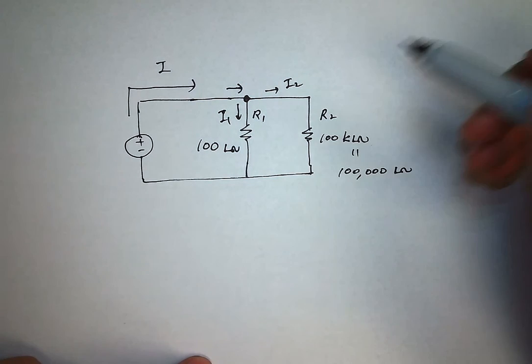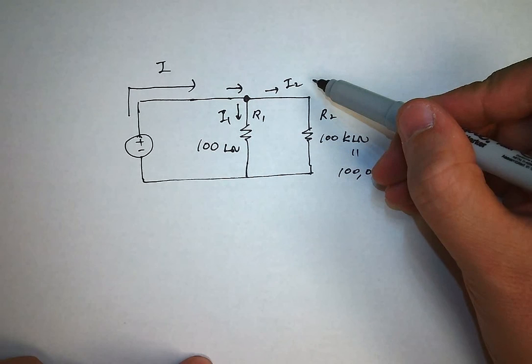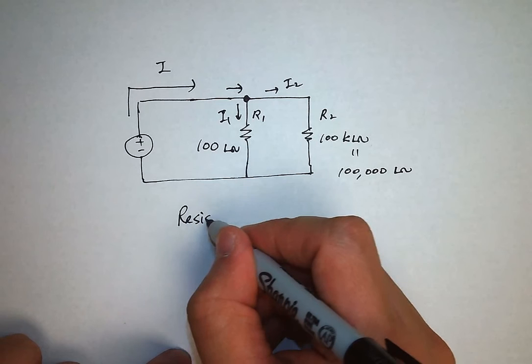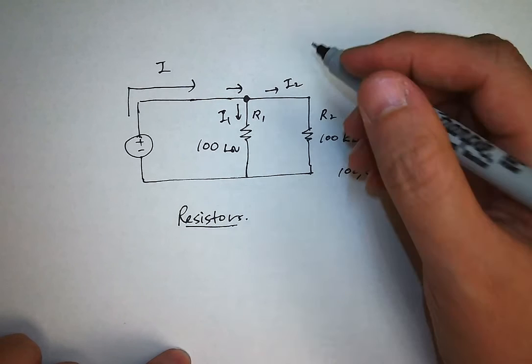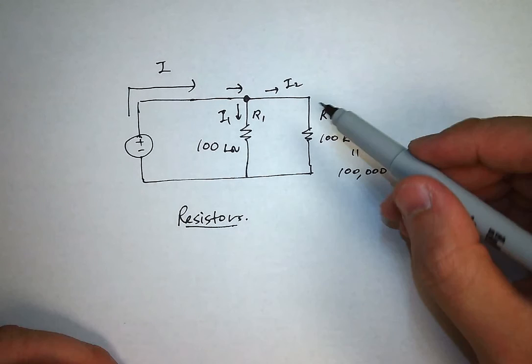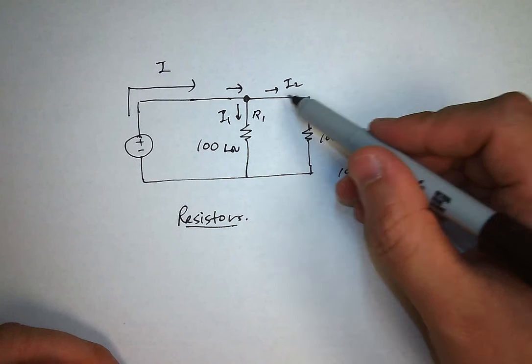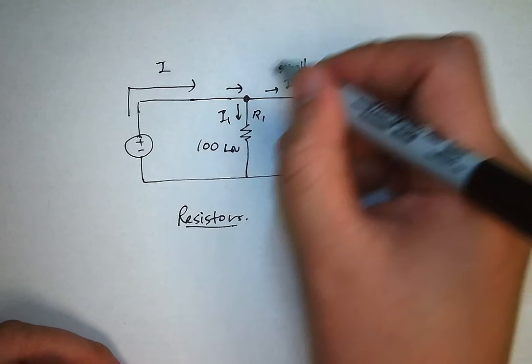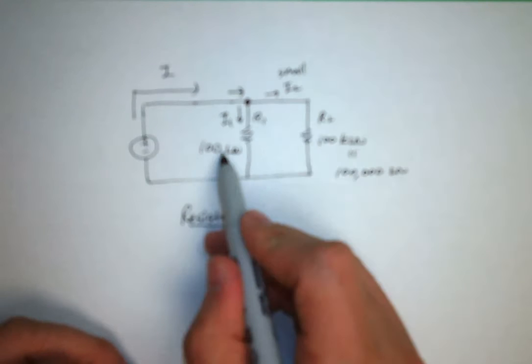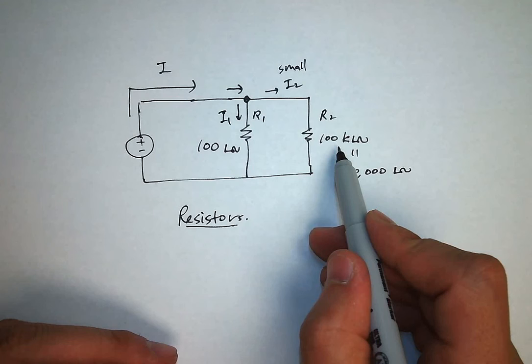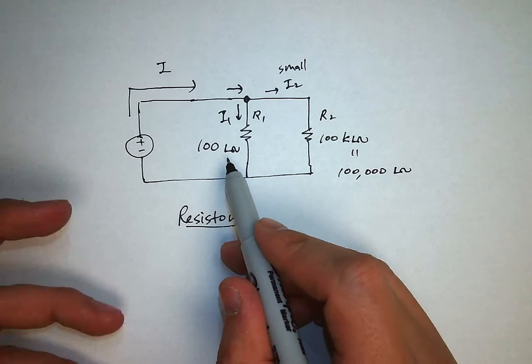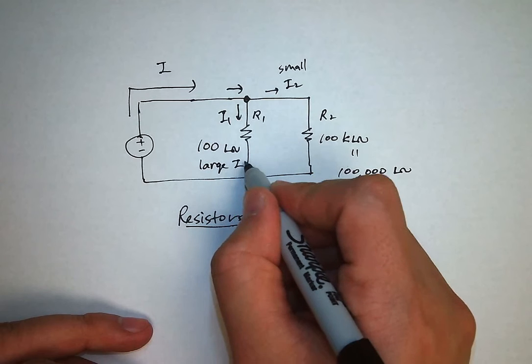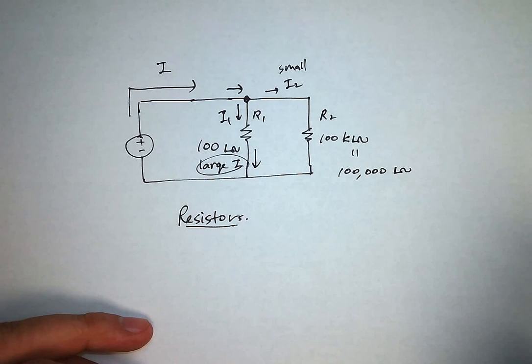The question is: how much current will flow in here and how much current will flow in there? So the word resistor means it resists - the resistor resists the flow of current. So the bigger the resistor, the more it resists the flow of current. So this will be small - you'll just have a small current in here. And because this resistor, relative to the 100 kilohm resistor, is smaller by a factor of a thousand, you'll have large current flow through this branch. So this is the